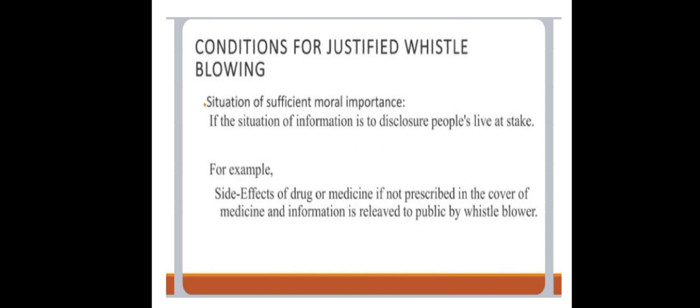The fourth criteria is that documented evidence must exist that would give a reasonable, impartial, and convincing case. The fifth and final criteria is that the employee must reasonably believe that going public will create some change to protect the public and is worth the risk to oneself — the risk taken should be for the betterment of the public and worth it. These are the important conditions or criteria for whistleblowing.